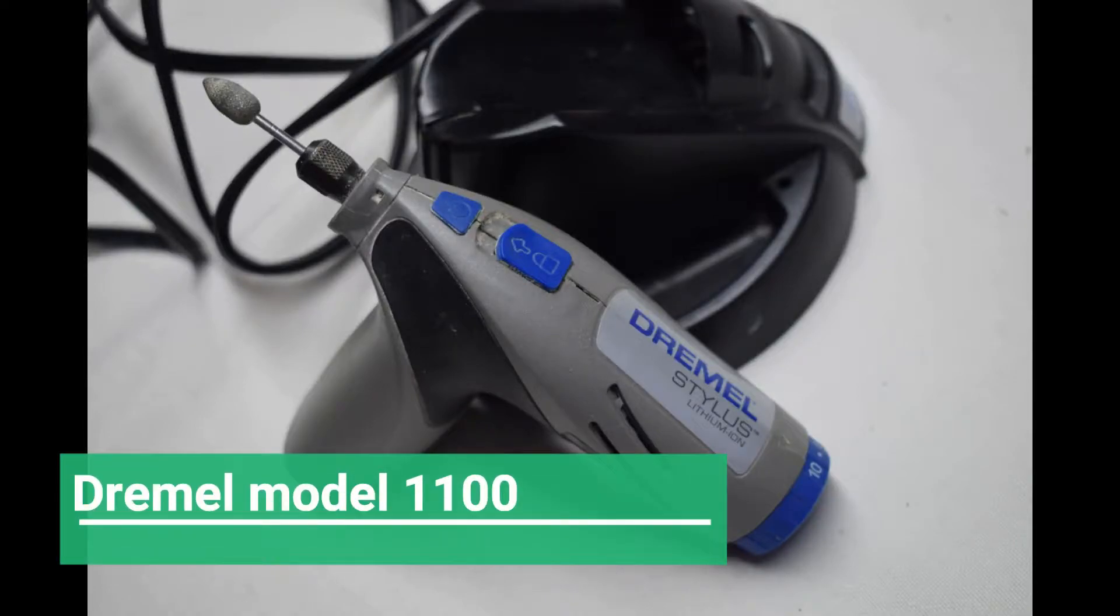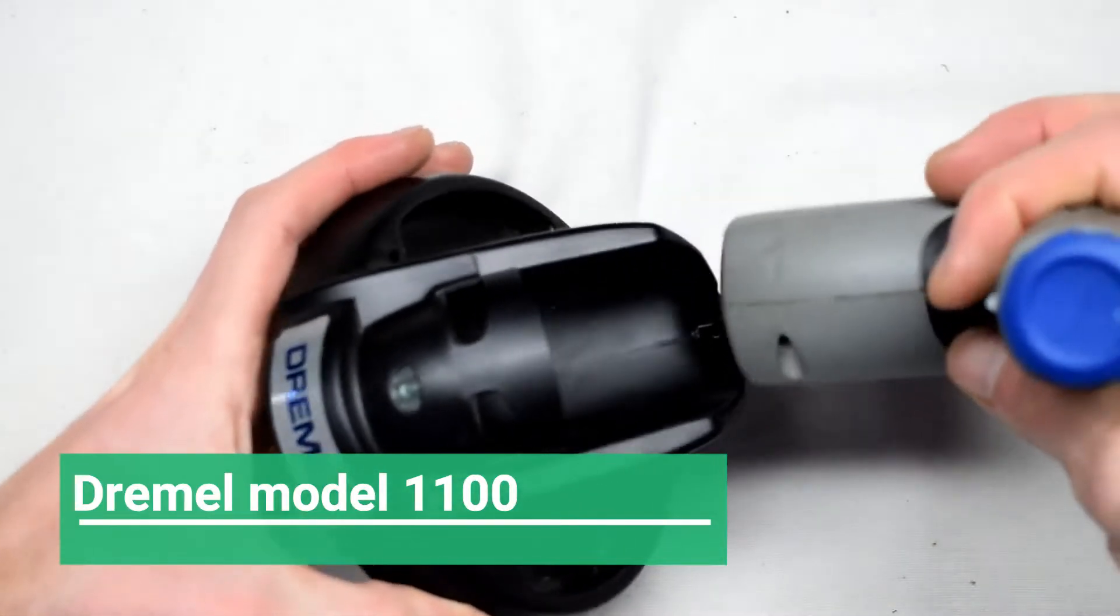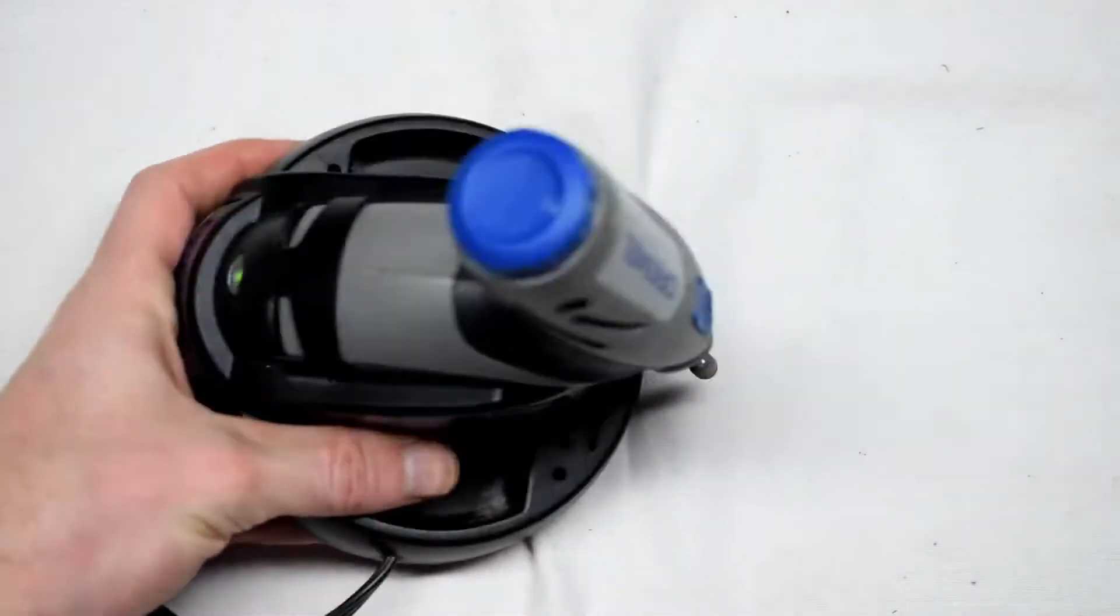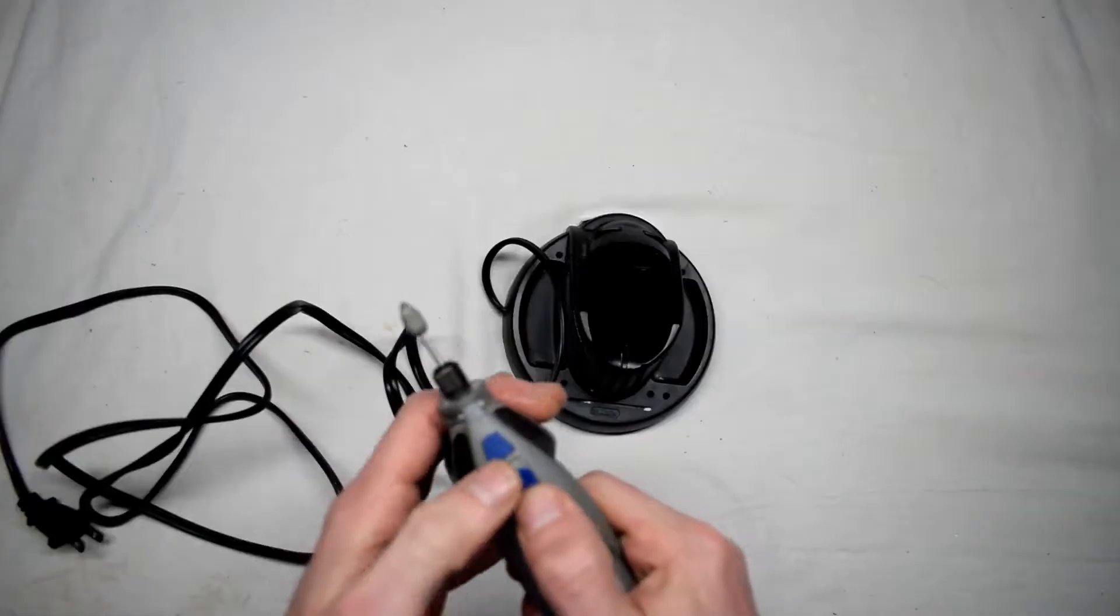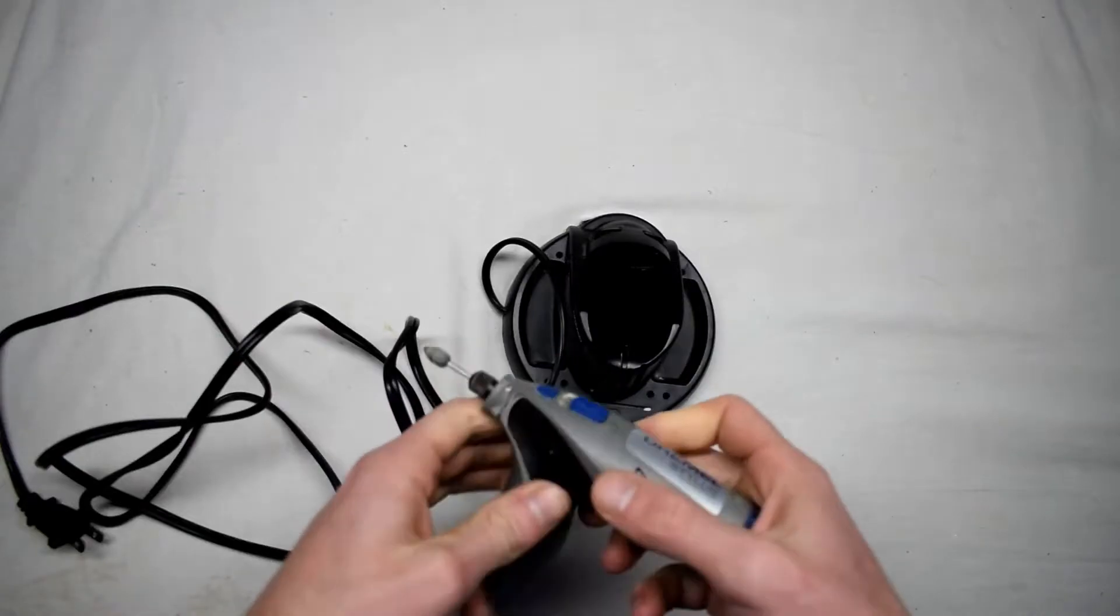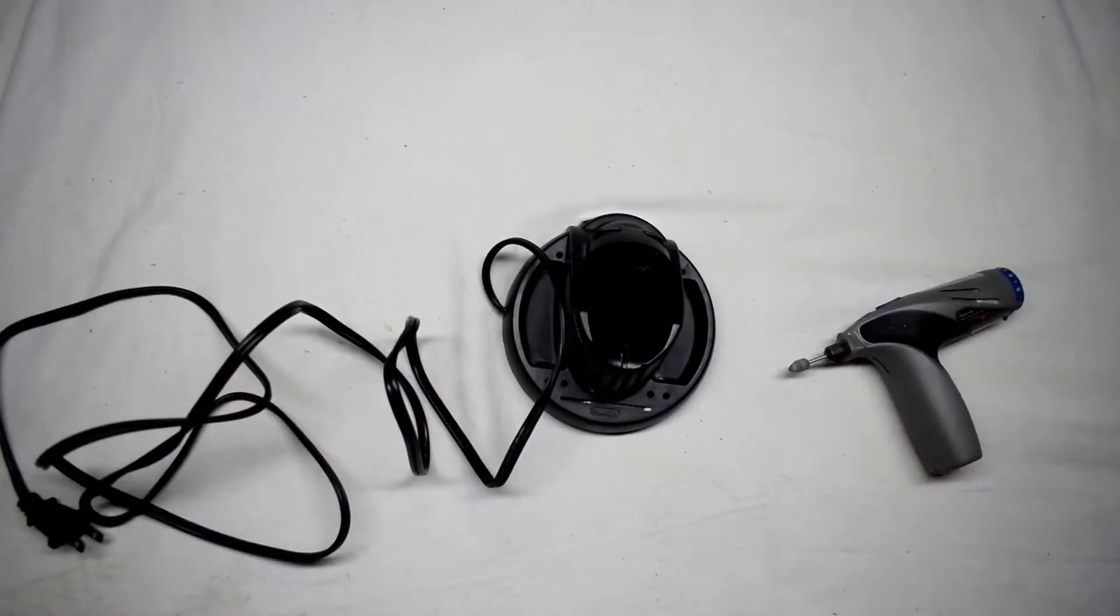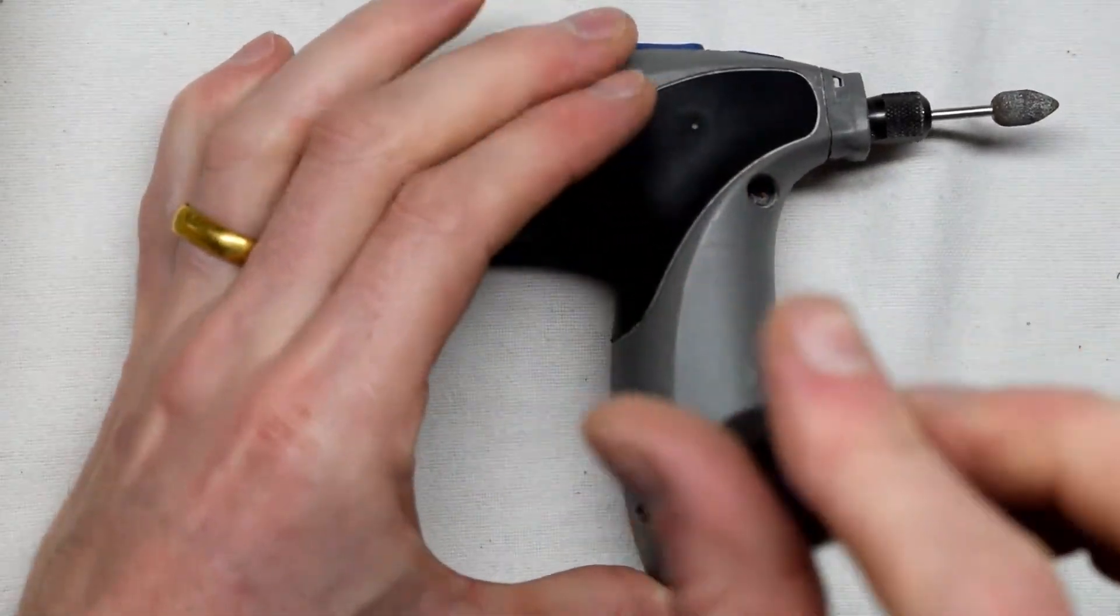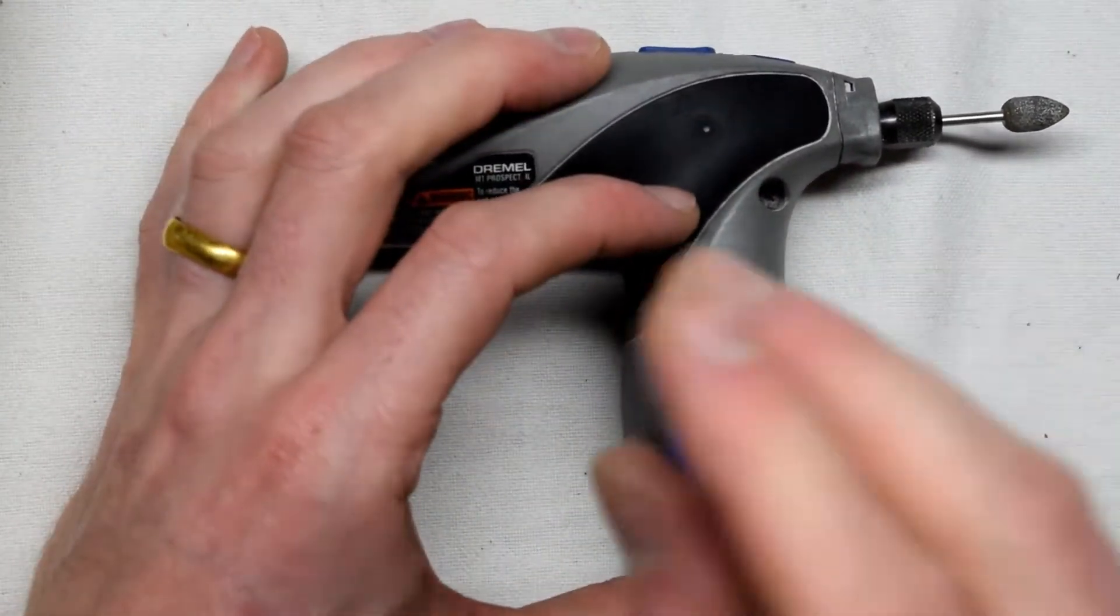This is a repair of a thermal stylus model 1100. It plugs in and looks like it's charging, but when you press the power button it doesn't turn on. The very first thing you want to do is remove all the screws with a star screwdriver.